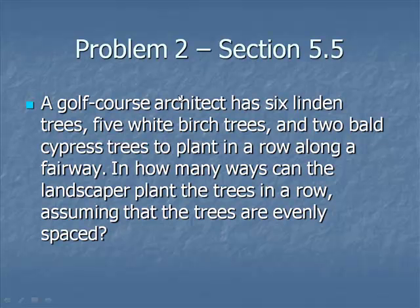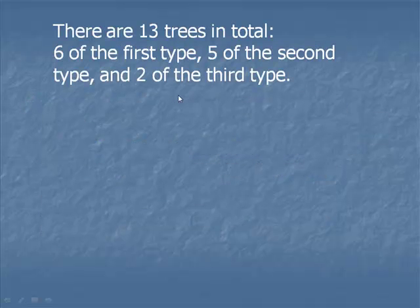Moving on to the second problem, a golf course architect has six linden trees, five white birch trees, and two bald cypress trees to plant in a row along a fairway. We're trying to determine how many different ways the landscaper can plant the trees in a row. First, we note there are 13 trees in total, six, five, and two of the three individual types.